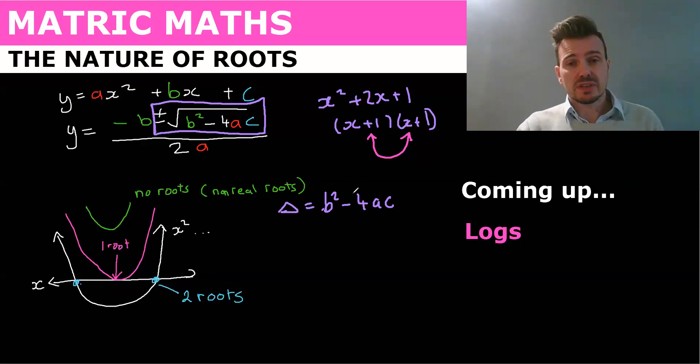Okay, so if this delta is zero, for instance, the square root of zero is zero, so plus zero and minus zero would be the same. So if b squared minus 4ac is equal to zero, so if delta is equal to zero.